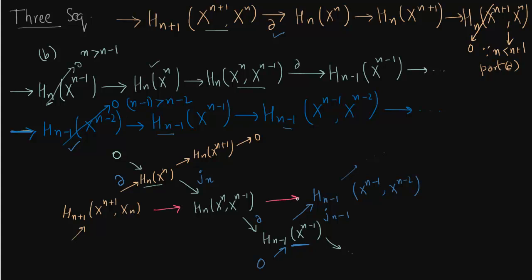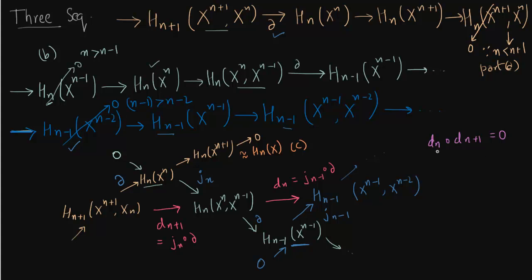We get two maps. The map dn+1 is defined as the composition of delta and jn — you first apply delta and then apply jn. Similarly, you first apply delta and then jn-1. We have now constructed a sequence of exact pairs. This essentially comes from part c: for k less than n it is nonzero, but for k greater than n it is zero. So both parts b and c are being used.